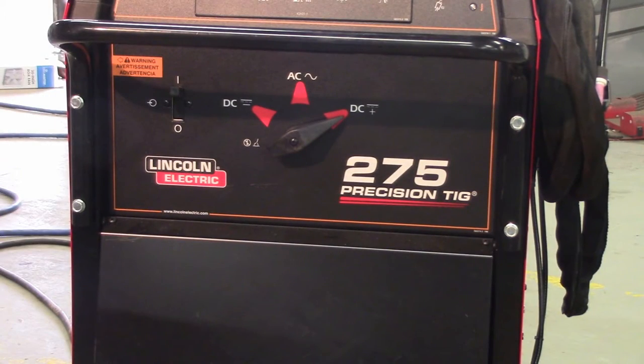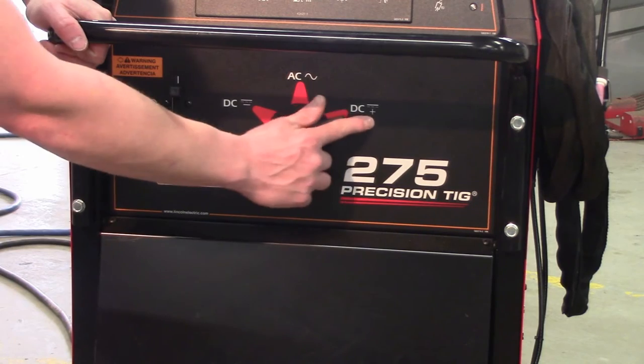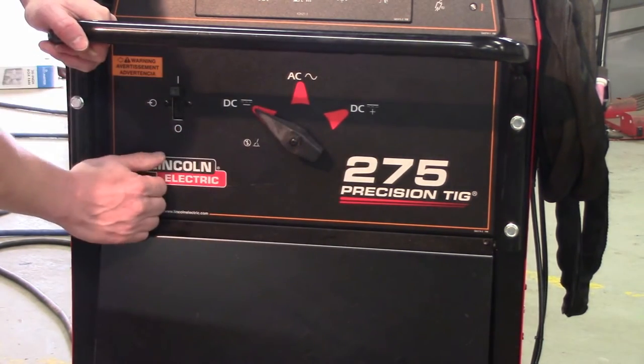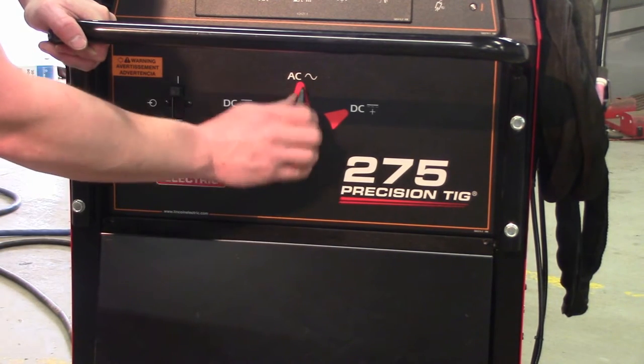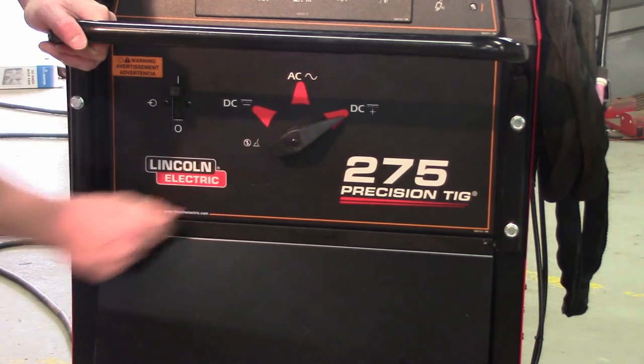Alright, this is our stick welder. We're going to start on the polarities here. You can see it's pointing to direct current electrode positive. So that's what we're going to want to be on. If you wanted to switch it to TIG, you'd go to direct current electrode negative. Or if you're welding aluminum, you'd go to AC. So we got it on direct current electrode positive.